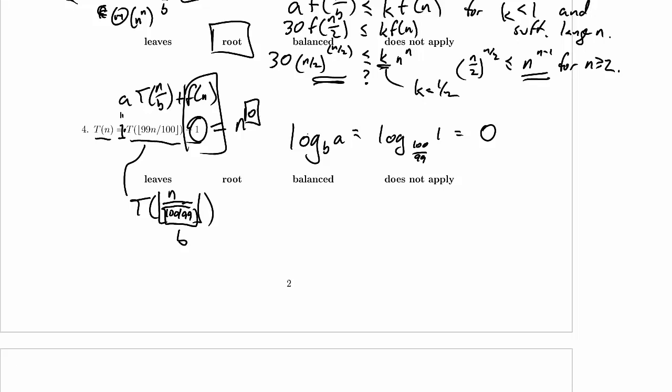So our exponent here matches the exponent we're going to have at the leaves, and that means we're in the balanced case. You can see it if I scroll back up.